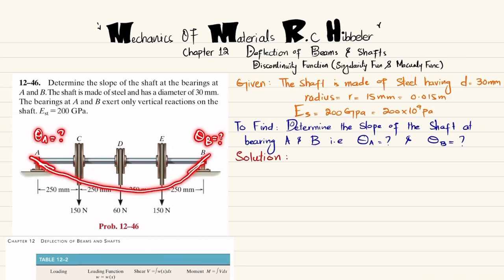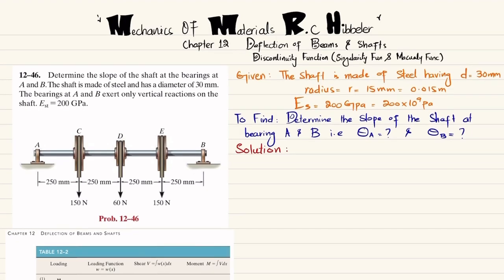Let's start with the solution. The first step is to find the reaction forces. If we remove the bearing at point A, we get a reaction force R_A, and removing the bearing at point B gives reaction force R_B. We will find R_A and R_B using the equations of equilibrium.